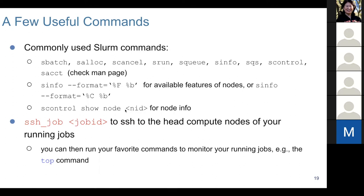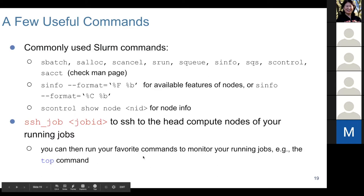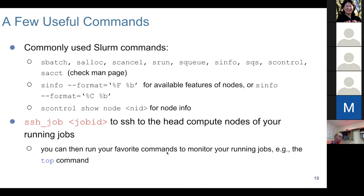These are some useful commands for working with the batch system. The ssh_job command is a custom command provided by our system admins that lets you SSH to the head compute node of your running job. This can be very useful to monitor your running job — for example, you can go to the head node and run the top command.